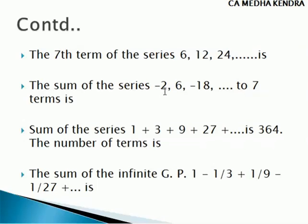The sum of the series minus 2, 6, minus 18, etc. up to 7 terms. It is a geometric progression with A, R, and N given. We need to check whether R is greater than 1, less than 1, or equal to 1. The second term divided by the first term is 6 divided by minus 2, giving minus 3. Since R is less than 1, we use the formula SN equal to A into (1 minus R power N) divided by (1 minus R) to find the sum of 7 terms.